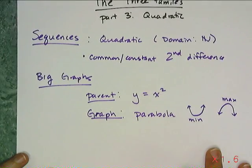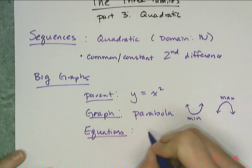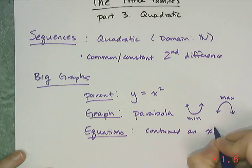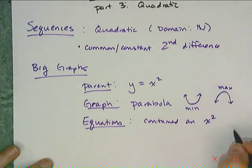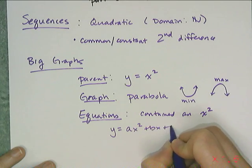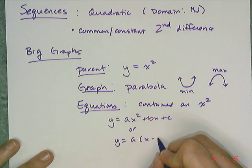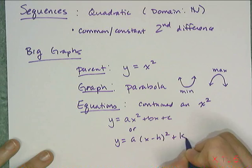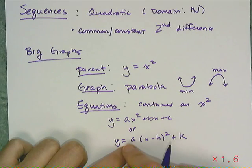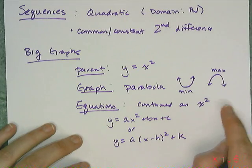With big graphs, we looked at the equations and we noticed that the equations all contained some x squared, or when you multiply them out it contained an x squared. So we had equations that looked in general like y = ax² + bx + c, or we had equations that looked like y = a(x - h)² + k, where we had the number being subtracted from x in parentheses. We had some other number potentially added outside and some other number multiplied. So these types of equations will generate the needed parabola.